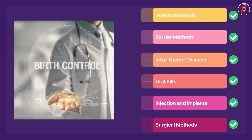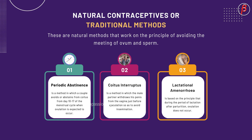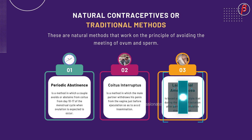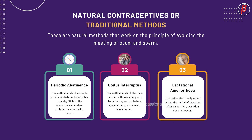Natural or traditional contraception works on the principle of avoiding the meeting of ovum and sperm. In periodic abstinence, a couple avoids or abstains from coitus from day 10 to 17 of the menstrual cycle, when ovulation is expected to occur. In coitus interruptus, the male partner withdraws his penis from the vagina just before ejaculation so as to avoid insemination. Lactational amenorrhea works on the principle that during the period of lactation after parturition, ovulation does not occur.